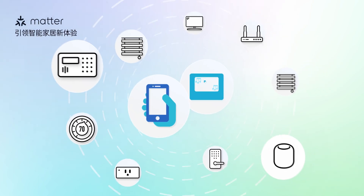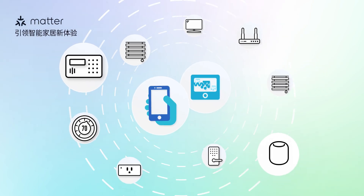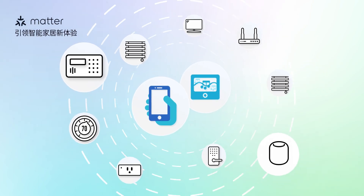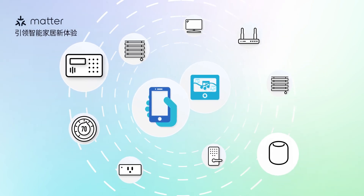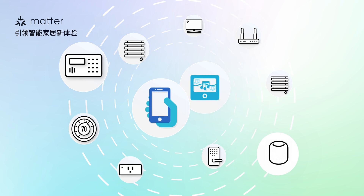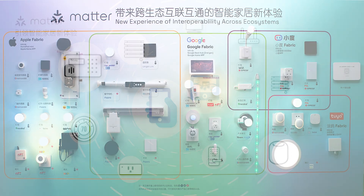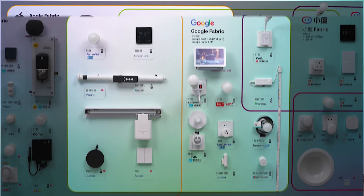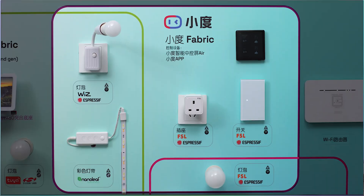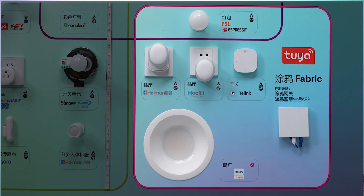Users can use mobile apps or controller devices, such as smart speakers, to control smart devices in the fabric. Our interoperability demo wall consists of four fabrics: Apple Home, Google Home, Xiaodu, and Tuya Smart.